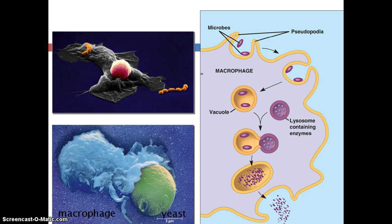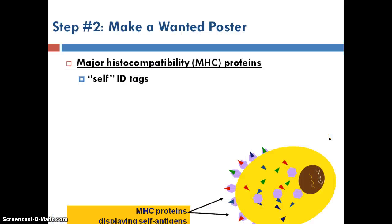Basically, the first step here is we recognize the bad guy and we captured him. We took him in for questioning in the interrogator's room and destroyed him with lysosomes so he talked — he told us all about his other accomplices. Then those cells said, we're going to draw up a sketch of all the other people that are wanted and display it on the outside of the police station so we can try to catch the rest of the bad guys. That wanted poster is called an MHC protein.